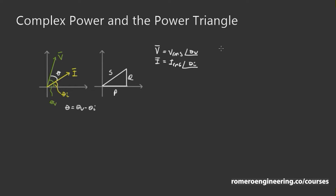The apparent power S — written as a phasor — is equal to the voltage phasor times the conjugate of the current phasor. Remember that the conjugate of a phasor is the same phasor but with the opposite angle. So the conjugate of I would be I_RMS at an angle of minus theta_i. This is just how apparent power is defined in common power system analysis — it's a convention.